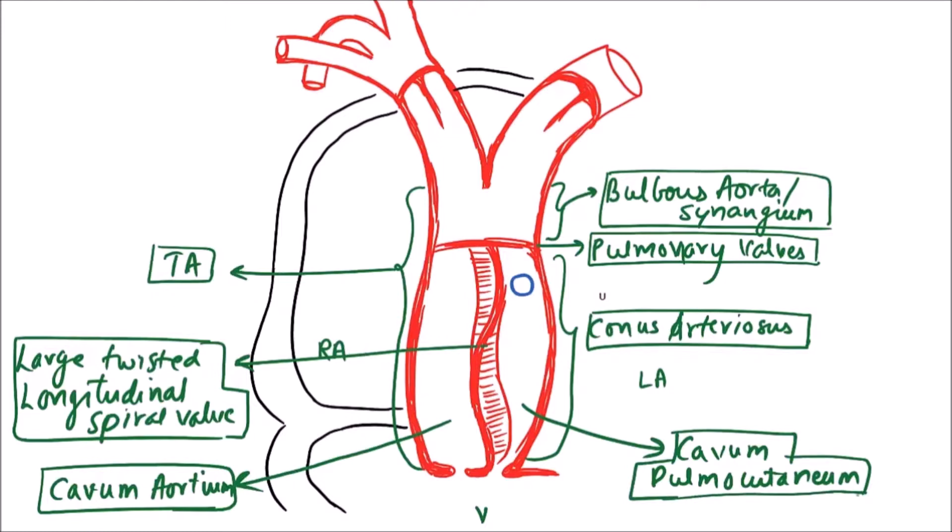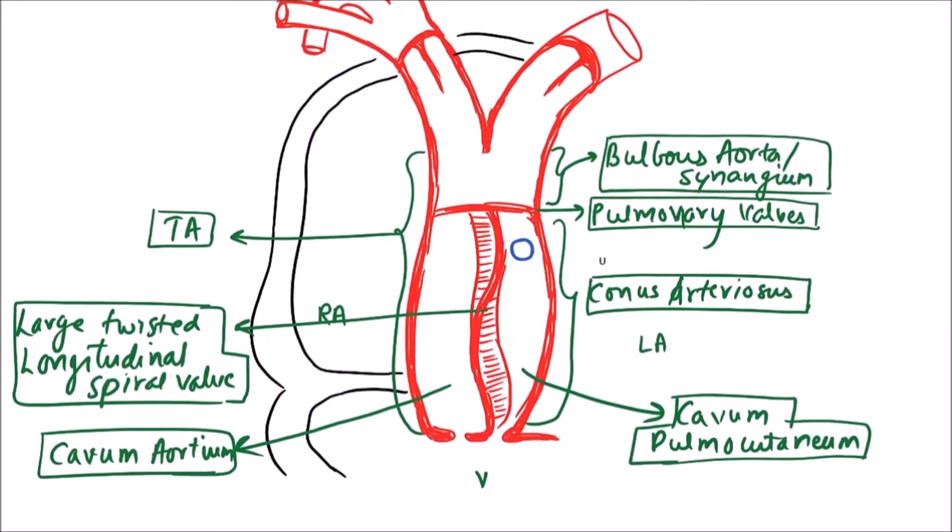So the cavum aortium part is right and ventral, while the cavum pulmo cutaneum is left and dorsal. Important thing is that this large twisted longitudinal spiral valve is attached dorsally but its ventral surface is free. Now these are basically openings of ventricle into truncus arteriosus.